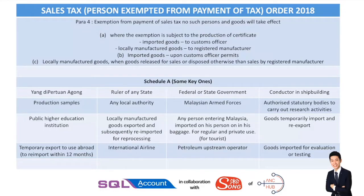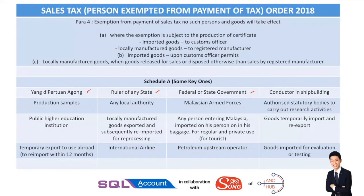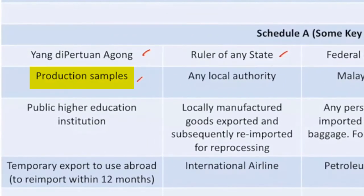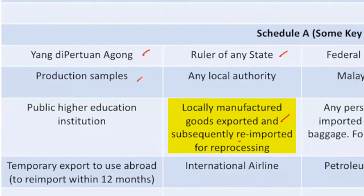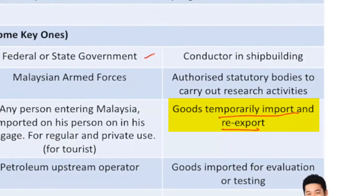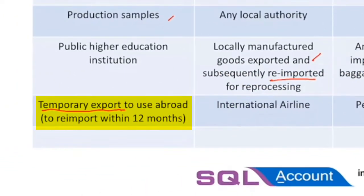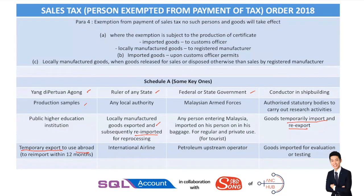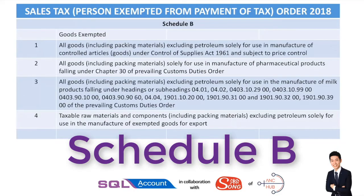Those exempted from payment of tax include, for example, the Yang di-Pertuan Agong, the Ruler of any state, and the federal or state government. Additionally, if you import certain production samples, or if you have local manufactured goods exported and subsequently re-imported for reprocessing, or goods on temporary import and re-export, or temporary export to use abroad — these items are not subject to sales tax. You are required to furnish a certificate, meaning you have to apply upfront.